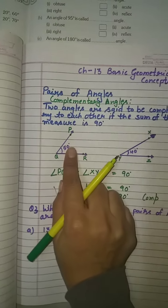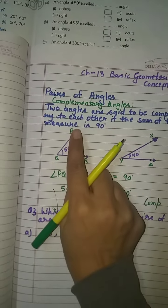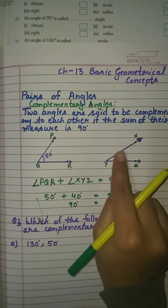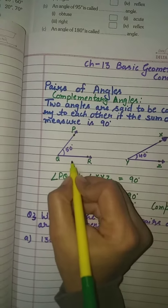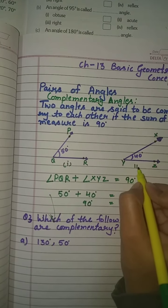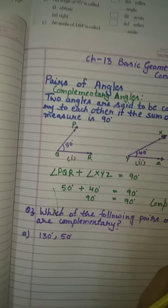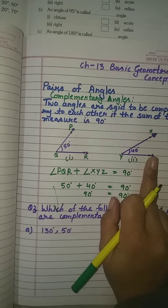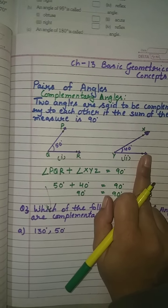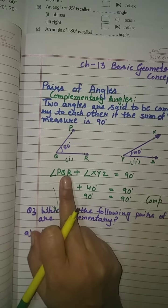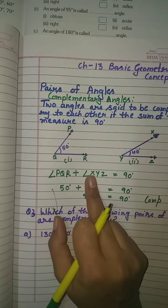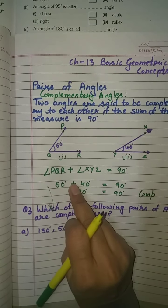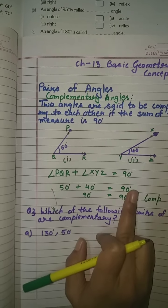Now, the first example: angle PQR and angle XYZ — angle 1 and angle 2. There are two angles: angle PQR is 50 degrees and angle XYZ is 40 degrees. Now, angle PQR plus angle XYZ equals 90 degrees. So 50 plus 40 equals 90 degrees.